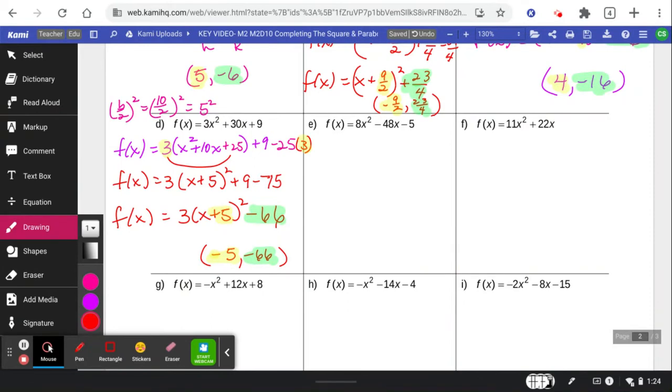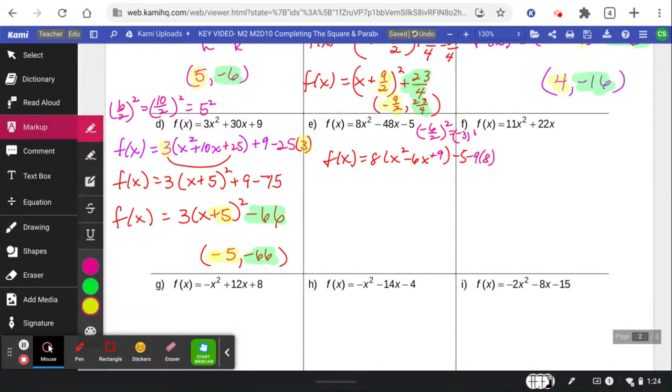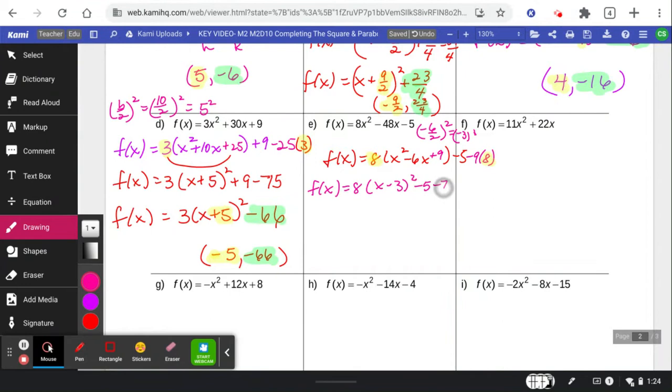All right. The next one, we're going to be dividing out an 8 and making space by bumping the 5 over. We take the negative 6 and divide it by 2. That gives us a negative 3 squared. So that means we're adding 9 and subtracting 9, 8 times. Why is it 8 times? This 8 means we've got to have this 8 back here. So 8 quantity x minus 3 squared factors minus 5 minus 72 gives us a negative 77 at the very end.